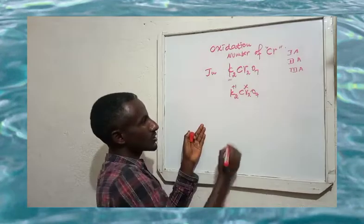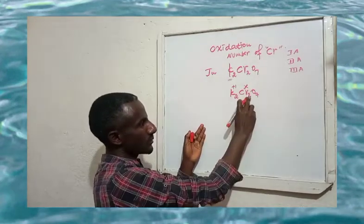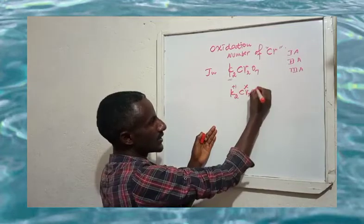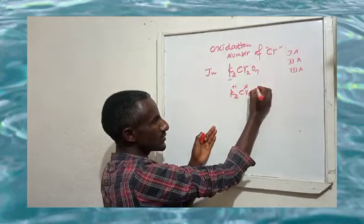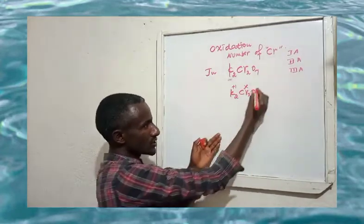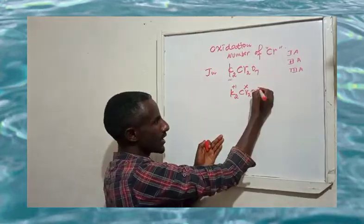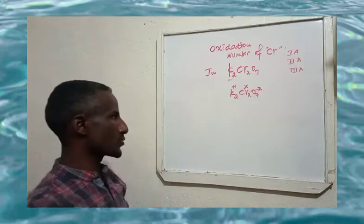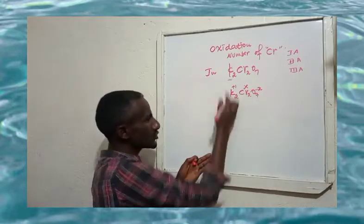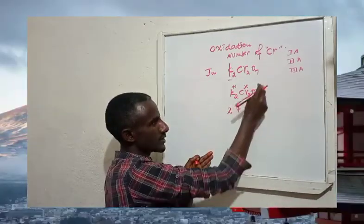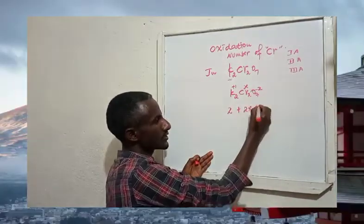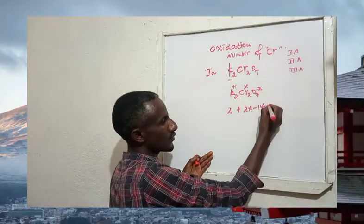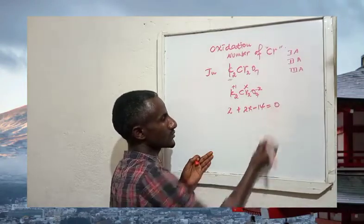The oxidation number of chromium is unknown, so we call it x, and there are 2 chromium atoms giving 2 times x. For oxygen, the normal oxidation number is minus 2, and there are 7 oxygen atoms giving 7 times minus 2. The total sum equals zero: 1 plus 2x plus 7 times minus 2 equals 0.